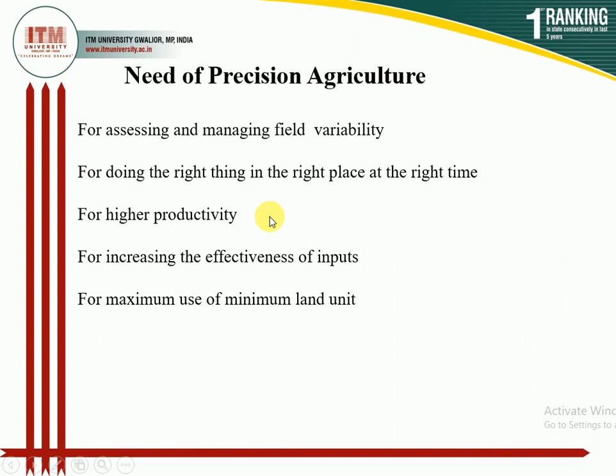The third reason is for higher productivity. Since precision farming proposes to prescribe certain management practices, it will definitely improve the yield per unit of land, provided nature's other uncontrollable factors are in favor. The fourth reason is for improving the efficiency of inputs. If a smaller amount of input can enhance the yield more, then why waste larger amounts? So the effectiveness of inputs is considered in precision agriculture.